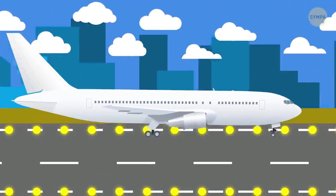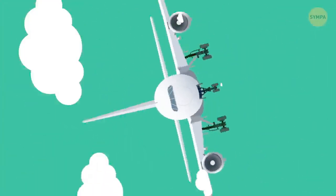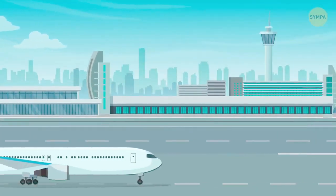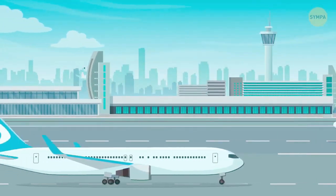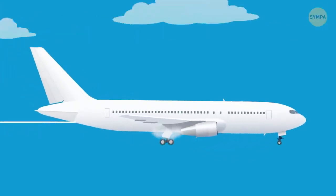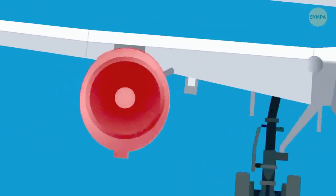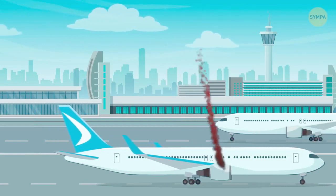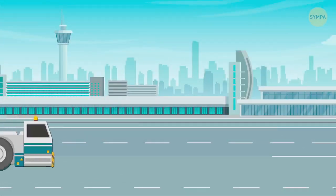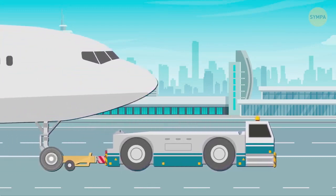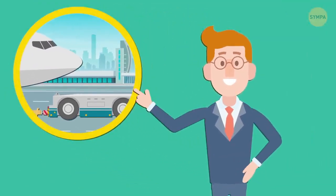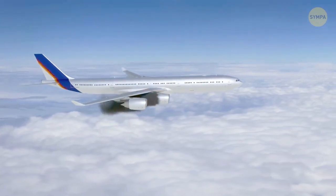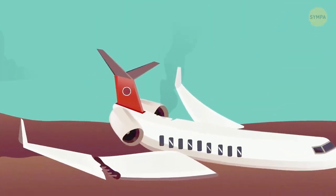Souvent, l'avion devra atterrir d'urgence, mais la descente ne sera pas forcément mouvementée. L'administration fédérale de l'aviation impose que les avions en ligne puissent voler et atterrir en toute sécurité avec un seul moteur. L'avion sera généralement redirigé vers l'aéroport le plus proche, où les secours se tiendront prêts à intervenir, davantage par précaution que par nécessité. Une panne de moteur est à prendre au sérieux, mais ce n'est pas nécessairement synonyme de catastrophe.